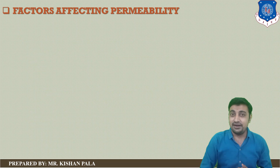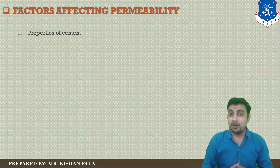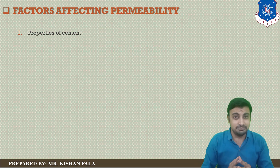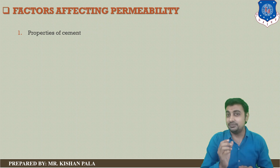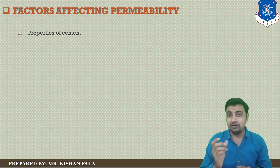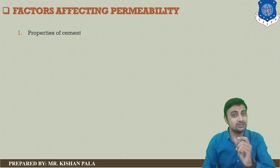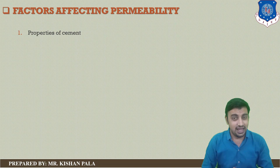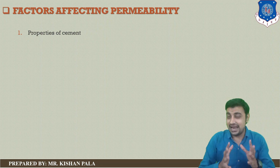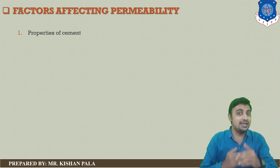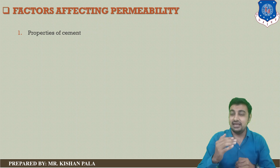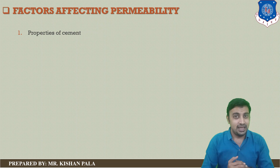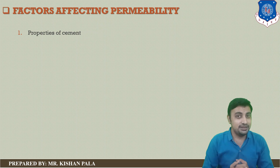Let us discuss factors affecting permeability. The first factor is properties of cement. The properties of cement affect the permeability of concrete because coarser cement particles increase permeability compared to finer particles. If you are using a high grade of cement, there will be a decrease in permeability, and if you are using a low grade of cement, permeability will increase.